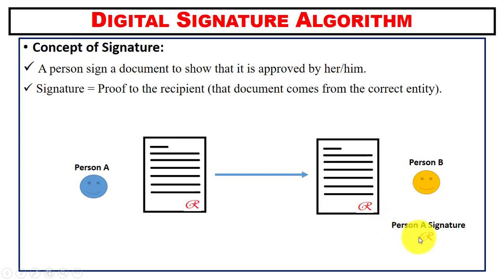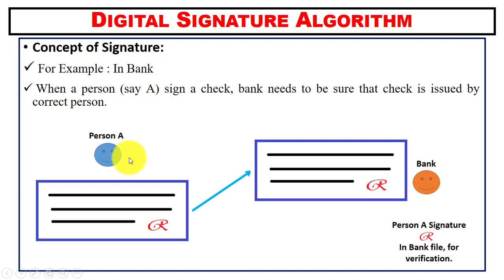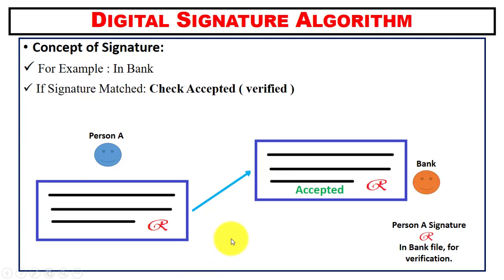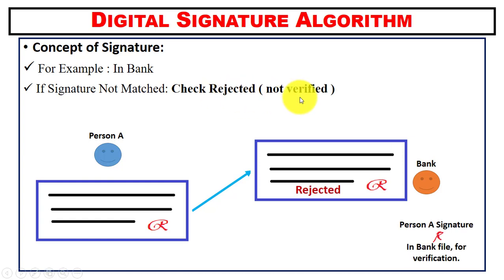Using the signature, the receiver can verify that the document comes from the correct entity or not. For example, in a bank, when a person — suppose person A — signs a check, the bank needs to be sure that the check is issued by the correct person. The bank performs signature verification: if the signature on the check matches the signature in the record, the check is accepted; otherwise it is rejected.